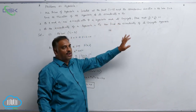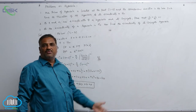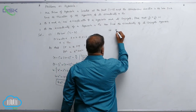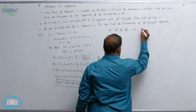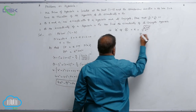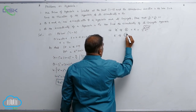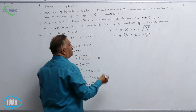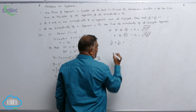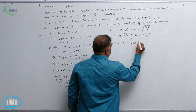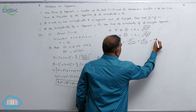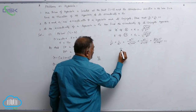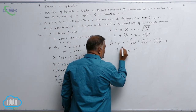Second problem: if e and e₁ are the eccentricities of a hyperbola and its conjugate, prove that 1/e² + 1/e₁² = 1. The eccentricity of the hyperbola is e = √((a² + b²)/a²), and the eccentricity of the conjugate hyperbola is e₁ = √((a² + b²)/b²). Writing out 1/e² + 1/e₁² gives a²/(a²+b²) + b²/(a²+b²) = 1. This is the result we need to prove.